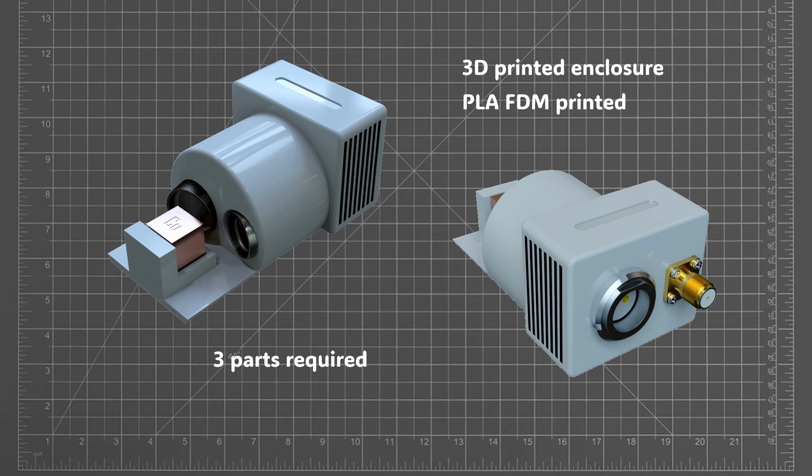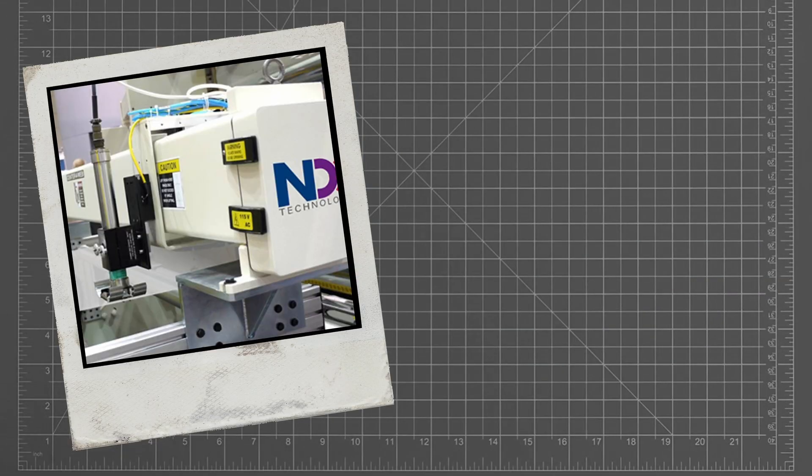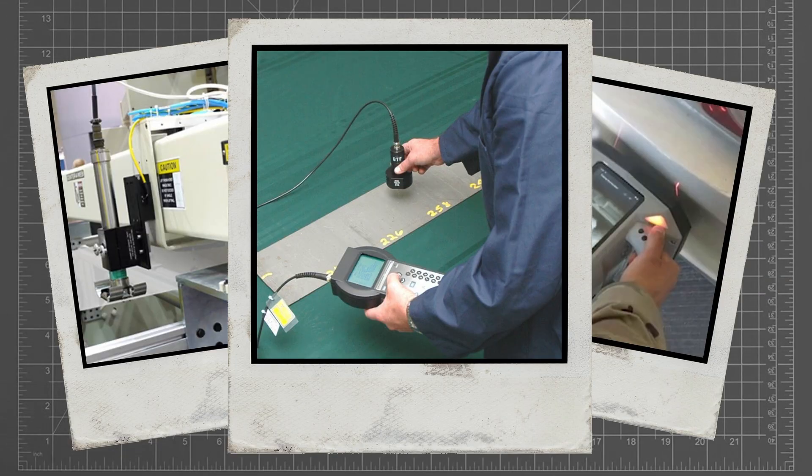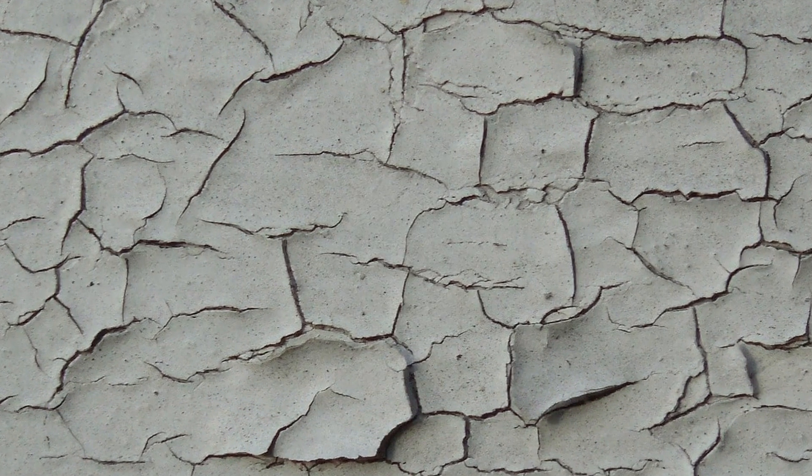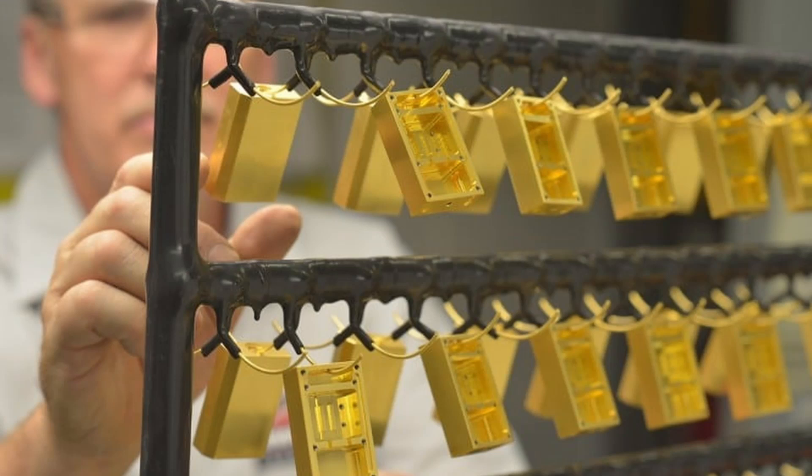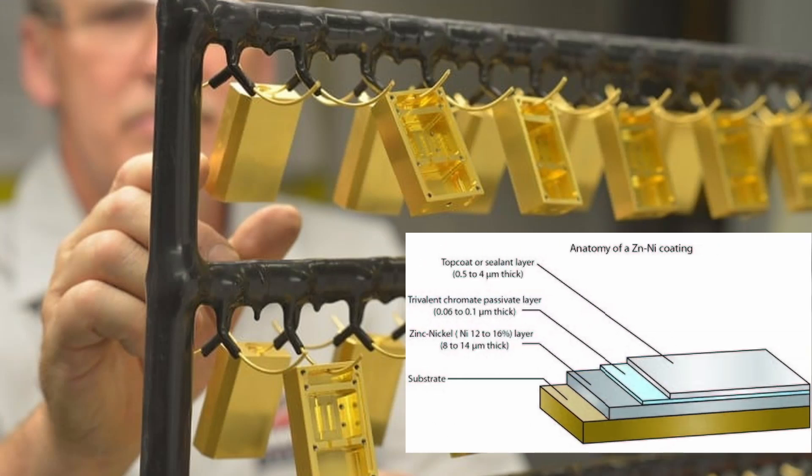It should also be pointed out that although uncommon, commercial examples of beta back-scattering systems do exist. These have been used in instruments that are designed to detect lead paint or to identify plating materials. These systems have a very significant cost advantage over XRF based products.